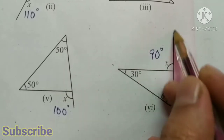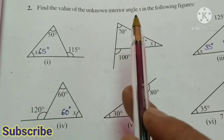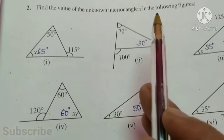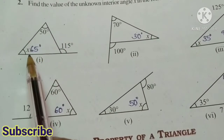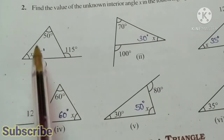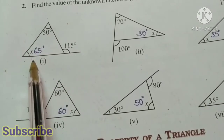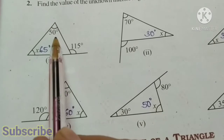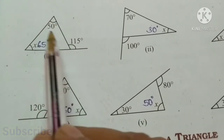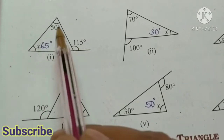Now second question: find the value of the unknown interior angle x in the following figures. Here we have to find the interior angle. The exterior angle is equal to the sum of the opposite interior angles, so 115 degrees is equal to x plus 50 degrees. We transpose 50, so we get 115 minus 50, that is equal to 65 degrees.